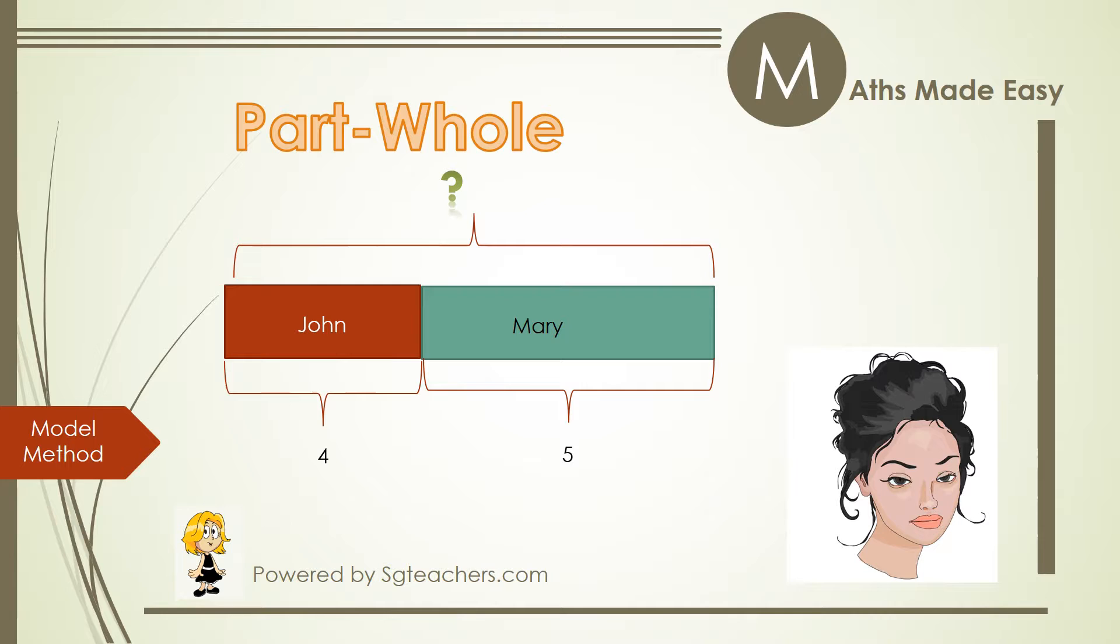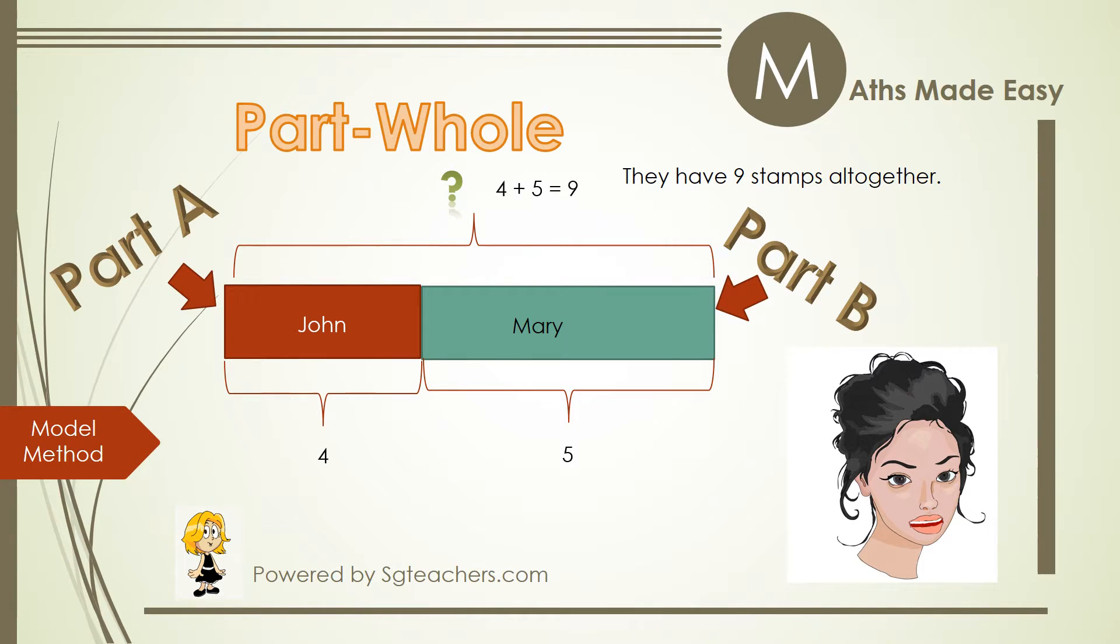This model can be visualized as a whole made up of 2 parts. 4 plus 5 equals 9. They have 9 stamps altogether.